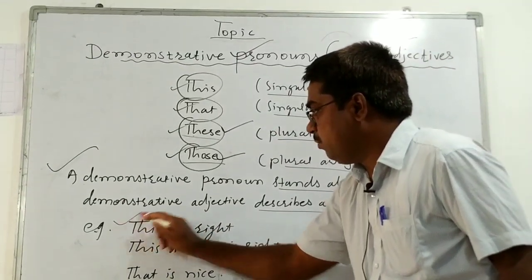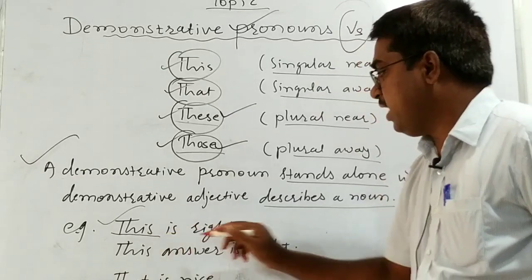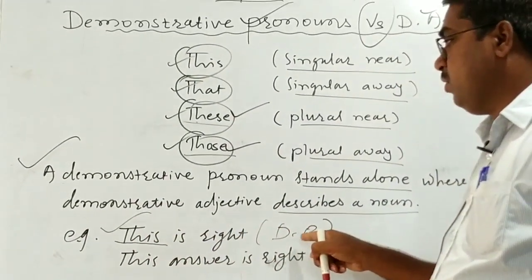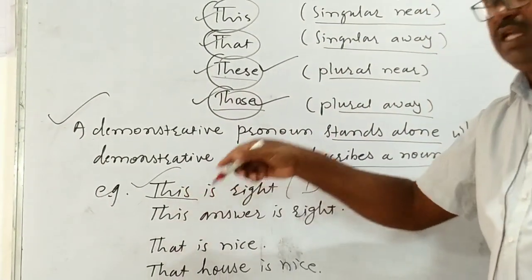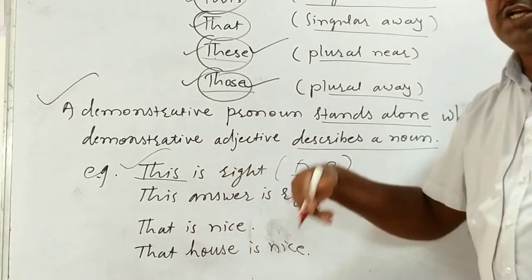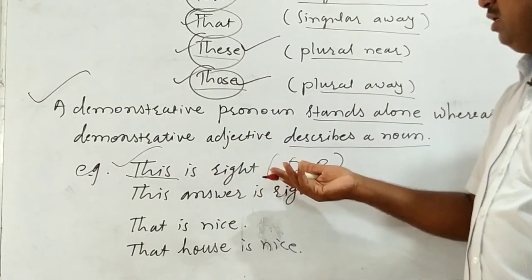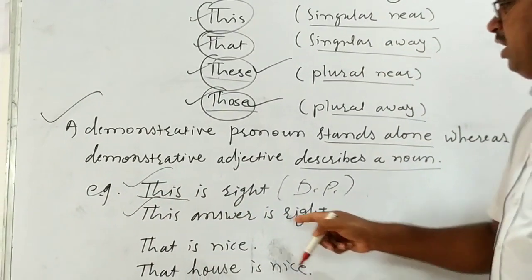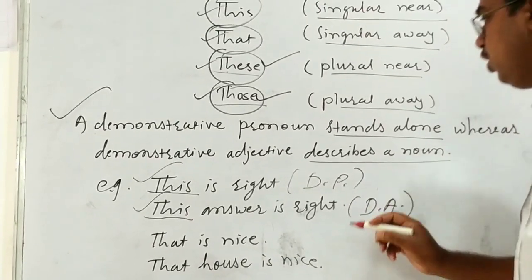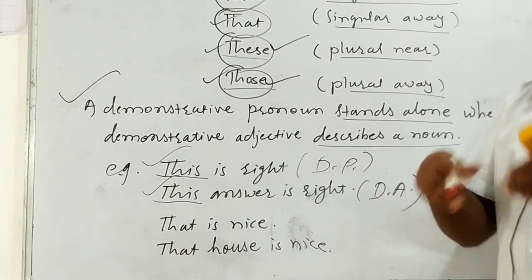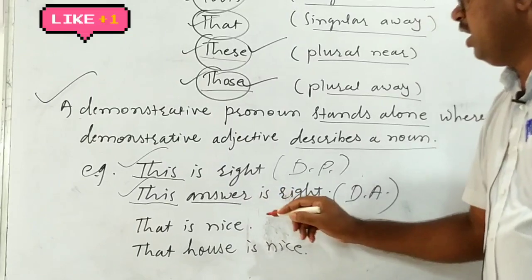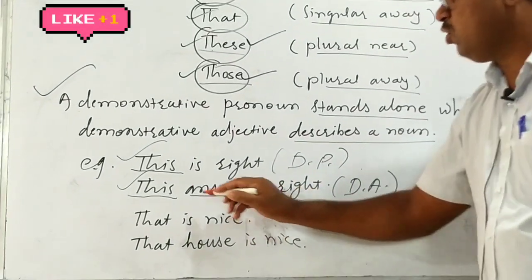Look at the first example: 'This is right.' In this example, 'this' functions as a demonstrative pronoun — it stands alone as the subject. You can replace 'this' with any other noun: 'Ram is right,' 'he is right,' 'she is right' — there is no much difference in meaning. Now the second example: 'This answer is right.' Here 'this' is not a demonstrative pronoun but a demonstrative adjective. The subject is 'answer,' which is a noun.